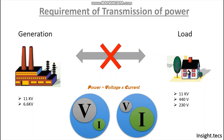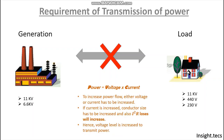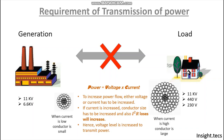As seen in the diagram, the blue circle represents power, the grey circle represents voltage, and the green circle represents current. In order to transmit the same amount of power, either voltage is increased or current is increased. If the current is increased, the conductor size has to be increased — small current means small conductor, high current means large conductor. Also, the I²R losses increase by increasing the value of current. Hence, power is transmitted by increasing the voltage levels.